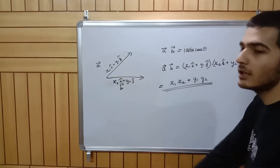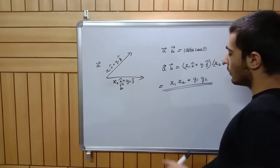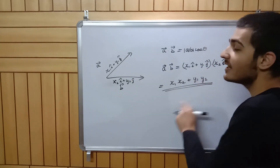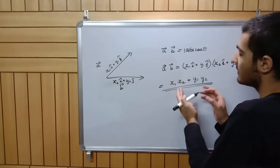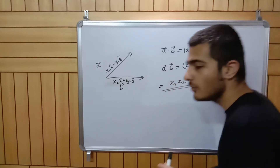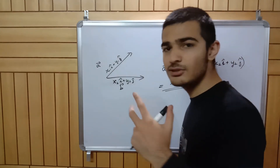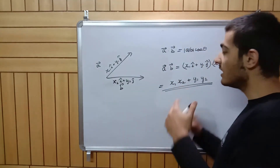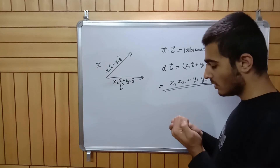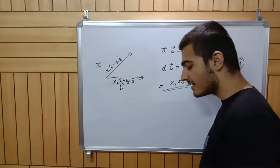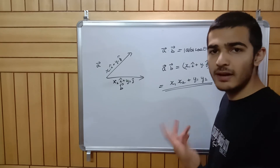You use this component formula when given vectors in component form. What we finally get is a number — there's no i-cap or j-cap in the result, there's no vector. Whenever you solve the dot product, you end up getting a number, not a vector.